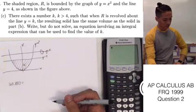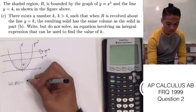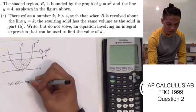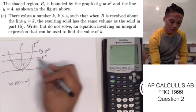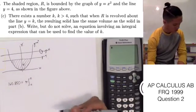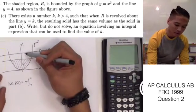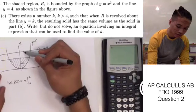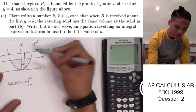Our equation that we have here is going to be, of course, volume, which is pi integral. It's still the points of intersection from negative 2 to 2. And then what we're going to do here is our outer radius is going to be our k, the y equals k, to our lower function, which is x squared.